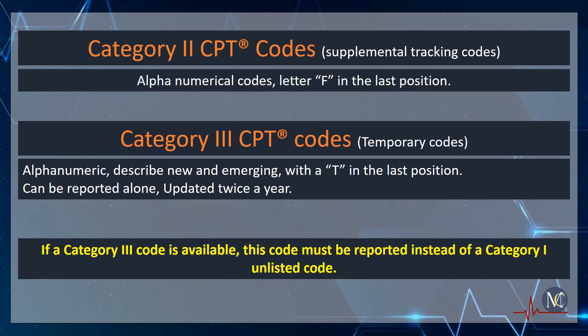Category 2 CPT codes are also known as Supplemental Tracking codes. These codes are also developed by the American Medical Association. These codes are alphanumerical codes with the letter F in the last position. Category 2 CPT codes provide additional information beyond Category 1 CPT codes.